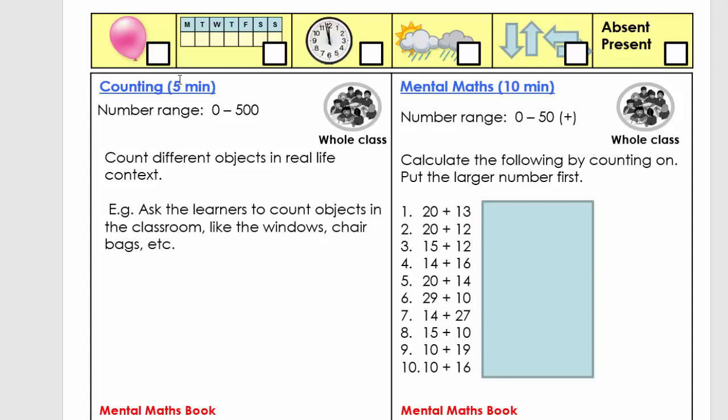Let's then look at the counting. The counting number range is 0 to 500, and what we're going to do is count things, but we give a value to a thing. If we're going to count for instance the chairs, a value of a chair is 10.